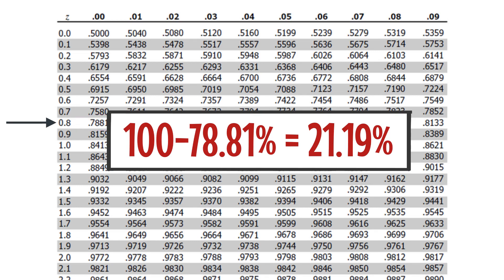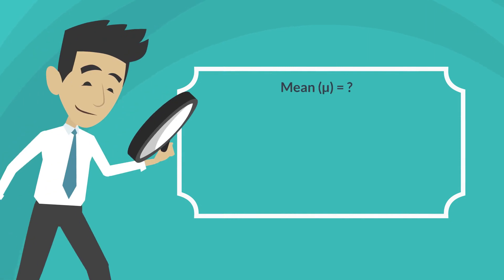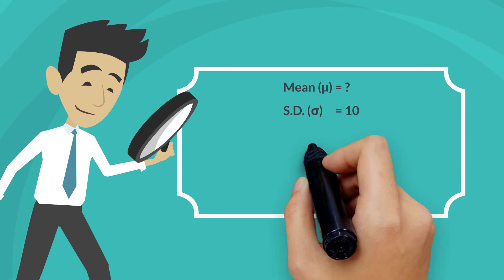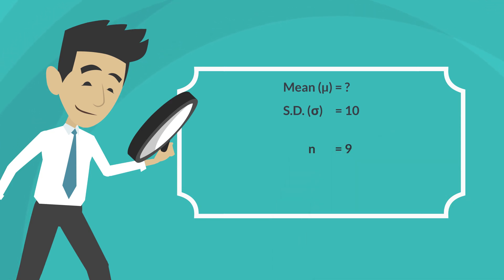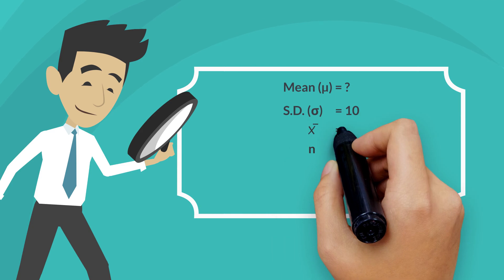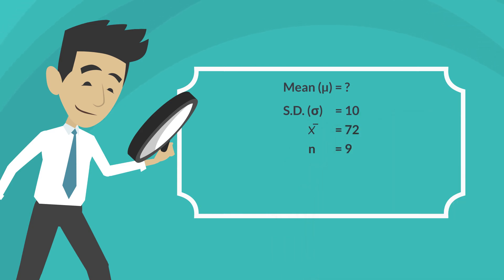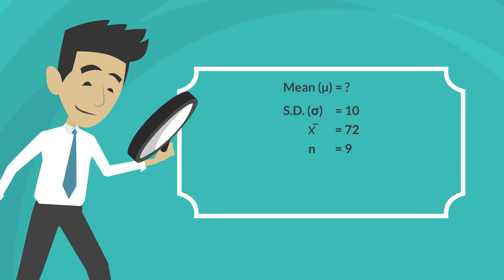Now let's say you don't know the average score for exam 1. However, you know your score and the scores of 8 of your friends. You calculated the average score for those 9 students as 72. If someone asks you what the average score for exam 1 is for the entire class, your best guess is 72, which is also called the point estimate of the population mean, as it is just one number.